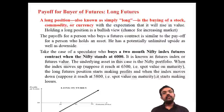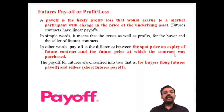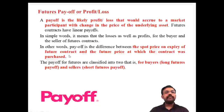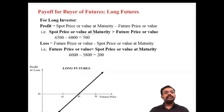The spot value at maturity is important. There is a formula — this is the importance: the spot price on the expiry of the future contract minus the future price at which the contract was purchased. This difference gives the payoff. For the long investor, the profit arises when the spot price at maturity is greater than the purchase (future) price.